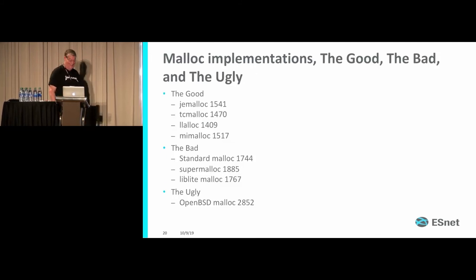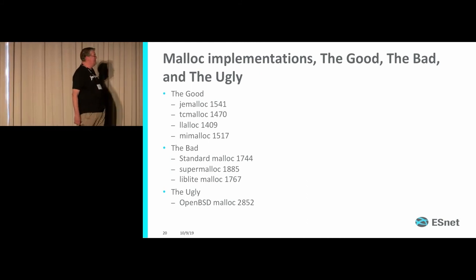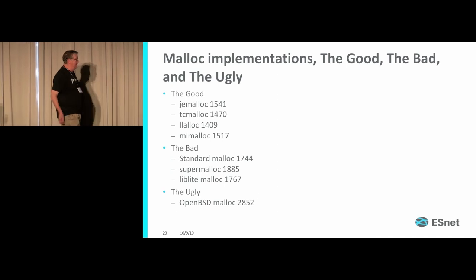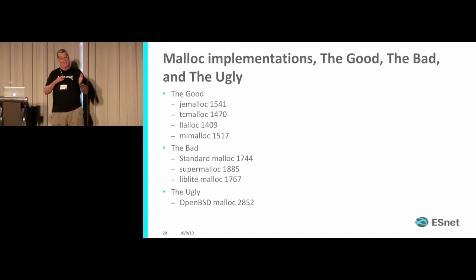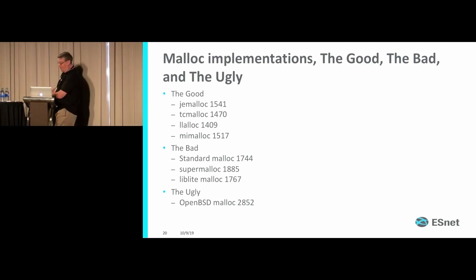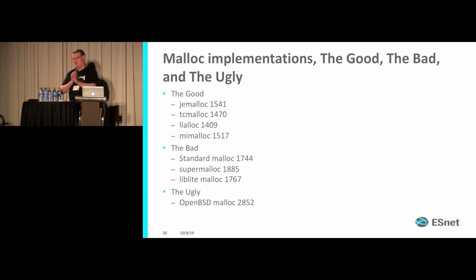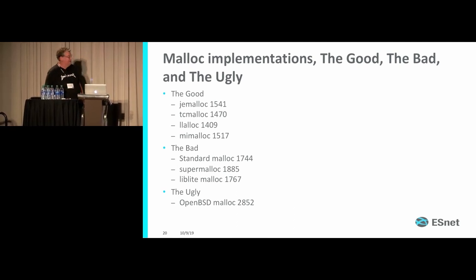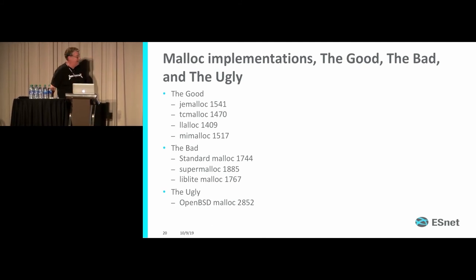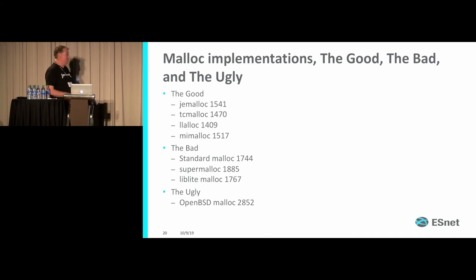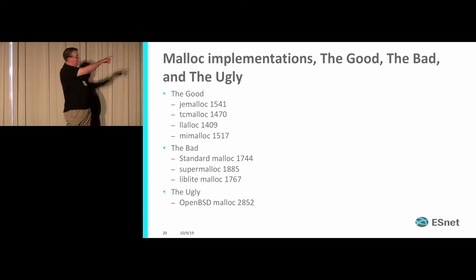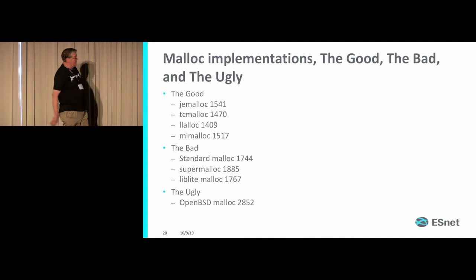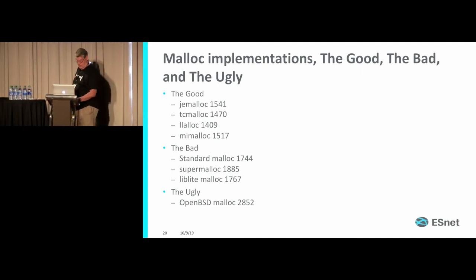The good: JE malloc, TC malloc, lockless malloc, mimalloc. The bad: standard malloc, super malloc, liblight malloc. OpenBSD malloc was really slow — even after I hacked on it to replace RC4 crypto with the standard RAND function hoping to speed it up, it still didn't turn out well. But we do have some impressive improvements: we're down to LL malloc at 1409 from 1744.